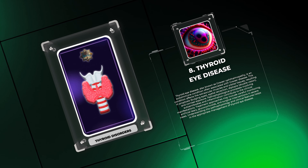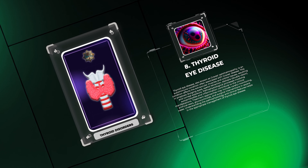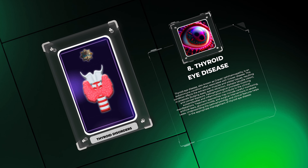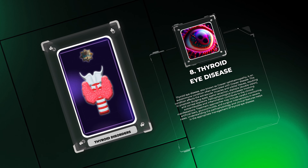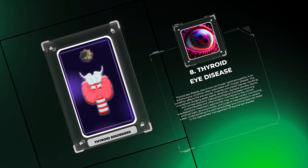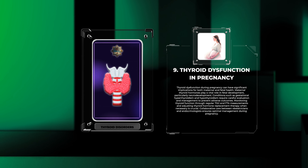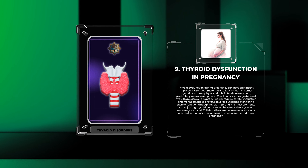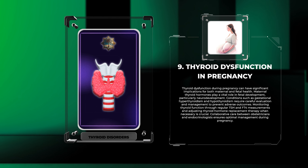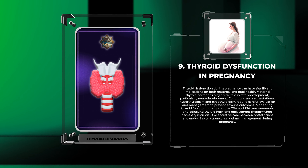Thyroid eye disease, also known as Graves' ophthalmopathy, is an autoimmune condition often associated with Graves' disease. It affects the extraocular muscles and orbital tissues, resulting in proptosis (bulging eyes), eyelid retraction, diplopia (double vision), and corneal exposure. Pathophysiological processes involving autoantibodies and inflammation contribute to these manifestations. Treatment approaches may include careful monitoring, artificial tears, glucocorticoids, and surgical interventions in severe cases.